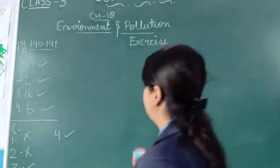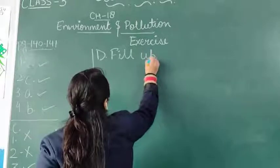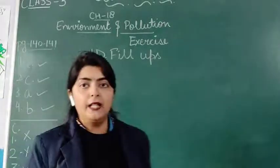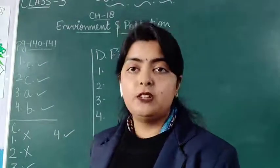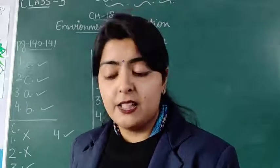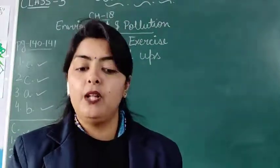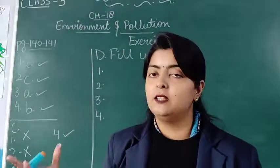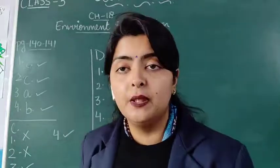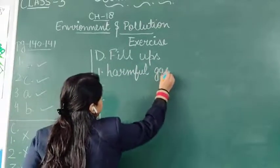Next we have Fill in the Blanks, which is D-part, with 1, 2, 3 and 4. Fill in the blanks with the help of the words given in the help box. Number 1: Air pollution is caused due to — options are water pollution, global, noise pollution, or harmful gases. Air pollution is caused due to harmful gases. Answer 1 is harmful gases.